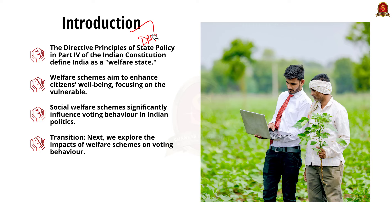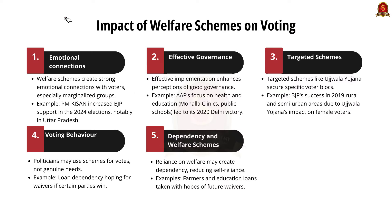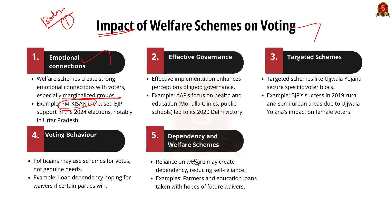In the dynamic landscape of Indian politics, the role of social welfare schemes has become increasingly significant in shaping voter behavior. In the main body, first part: welfare schemes can create a strong symbolic and emotional connection with voters, particularly among marginalized communities. For example, PM-KISAN provides financial assistance to farmers, which has significantly bolstered support for the BJP in the 2024 general elections. States like Uttar Pradesh, where the scheme was actively promoted, saw substantial voter turnout in favor of the BJP.